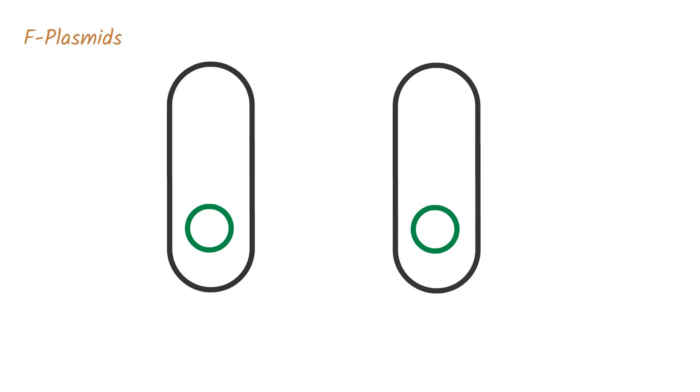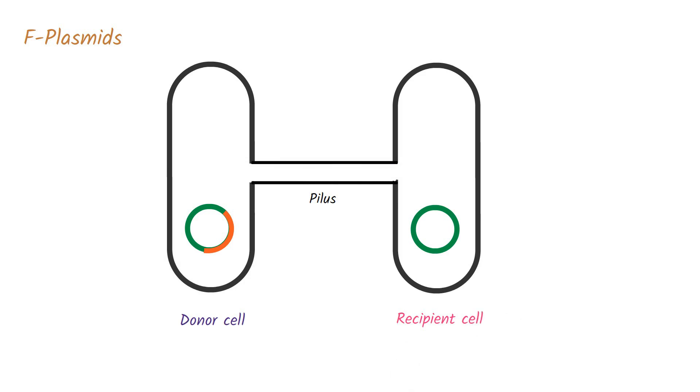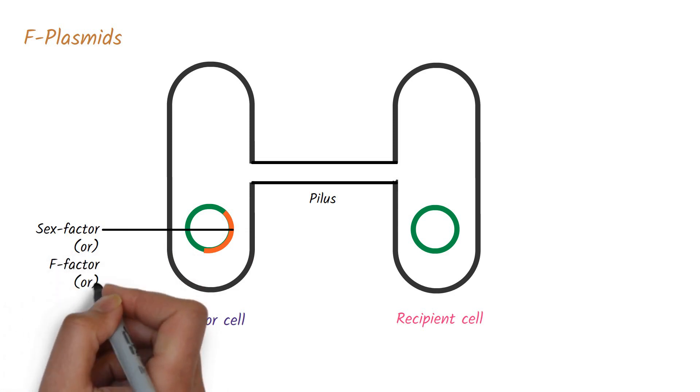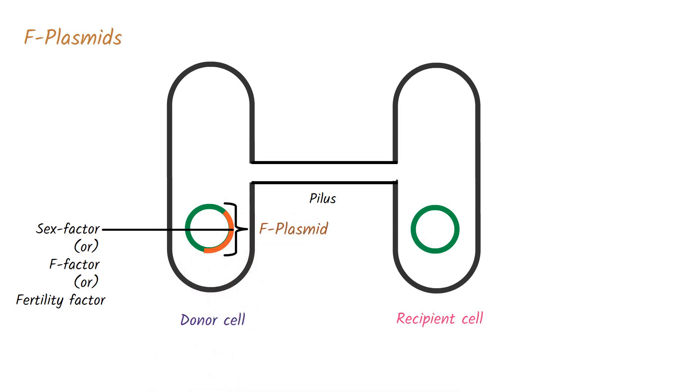As mentioned previously, the conjugative plasmids play an important role in gene transfer from one cell to another. In order to transfer the genetic material, the donor cell must have a DNA sequence that allows the donor cell to produce pilus, which will connect to the recipient cell during conjugation. This DNA sequence is called the sex factor, or F factor, or fertility factor. The plasmids that have F factor genes are called F plasmids. Bacteria that have F plasmids are called F plus, and the bacteria without it are called F minus.